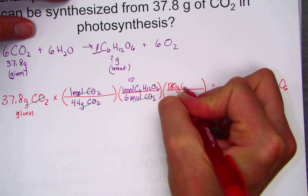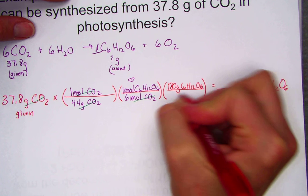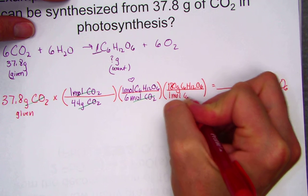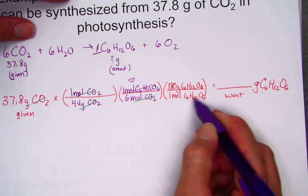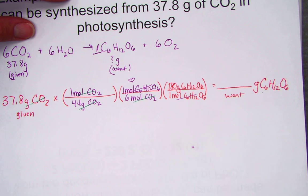180 grams of glucose for every 1 mole of glucose. And what this last step has enabled us to do is to cancel the moles and bring it out to grams.